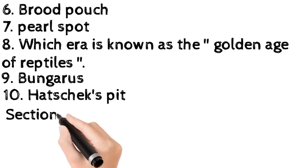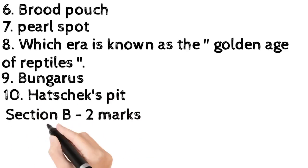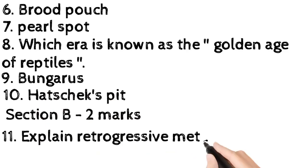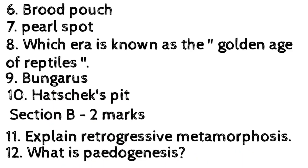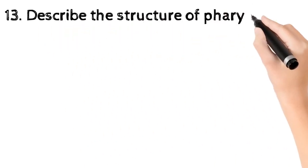Section B, 2 mark. Eleven, explain retrogressive metamorphosis. Twelve, what is paedogenesis? Thirteen, describe the structure of pharynx of Ascidia.